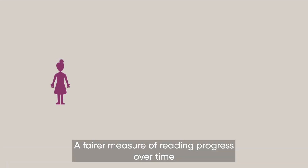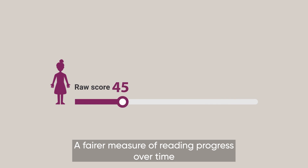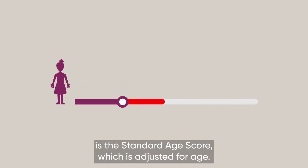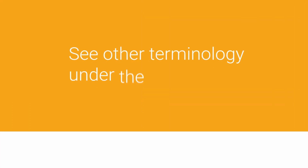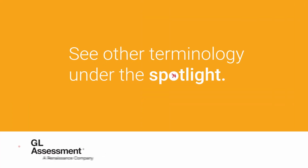A fairer measure of reading progress over time is the standard age score, which is adjusted for age. See other terminology under the spotlight.